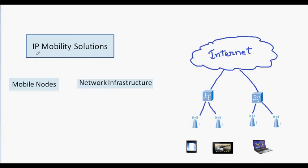Why do we need an IP Mobility solution? IP Mobility is a solution to maintain the active connection of the mobile node when the mobile node moves from one access router to the other access router. The major problem in maintaining the connection is the IP address. The IP address changes when the mobile node moves from one access router to the other access router because the mobile node is changing the network.